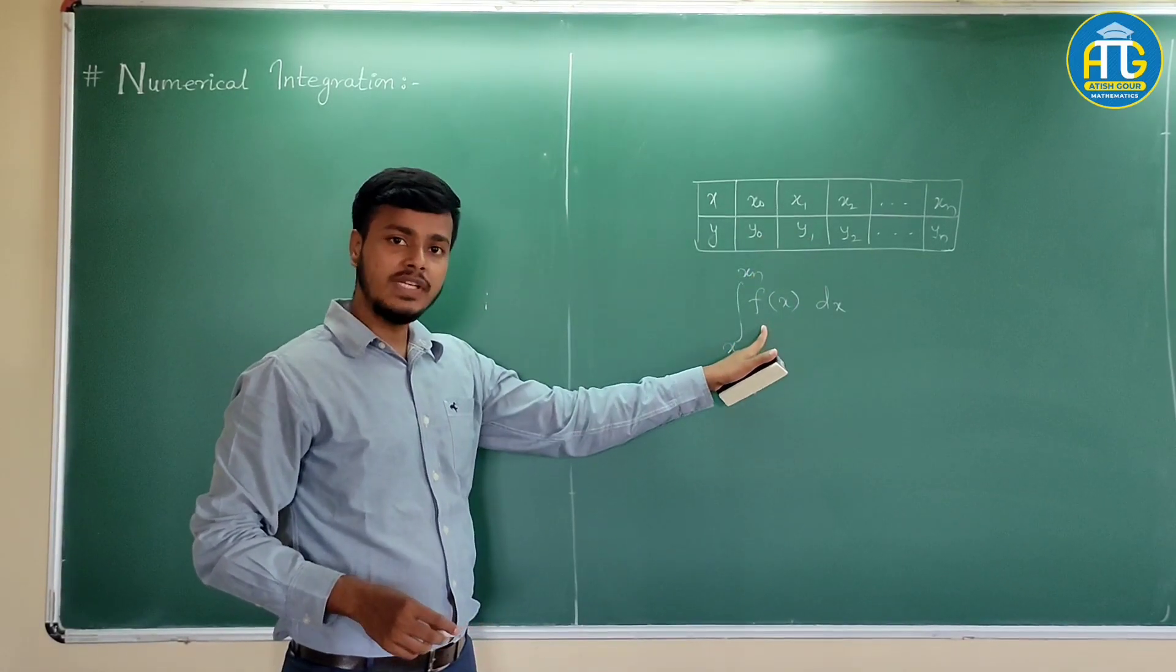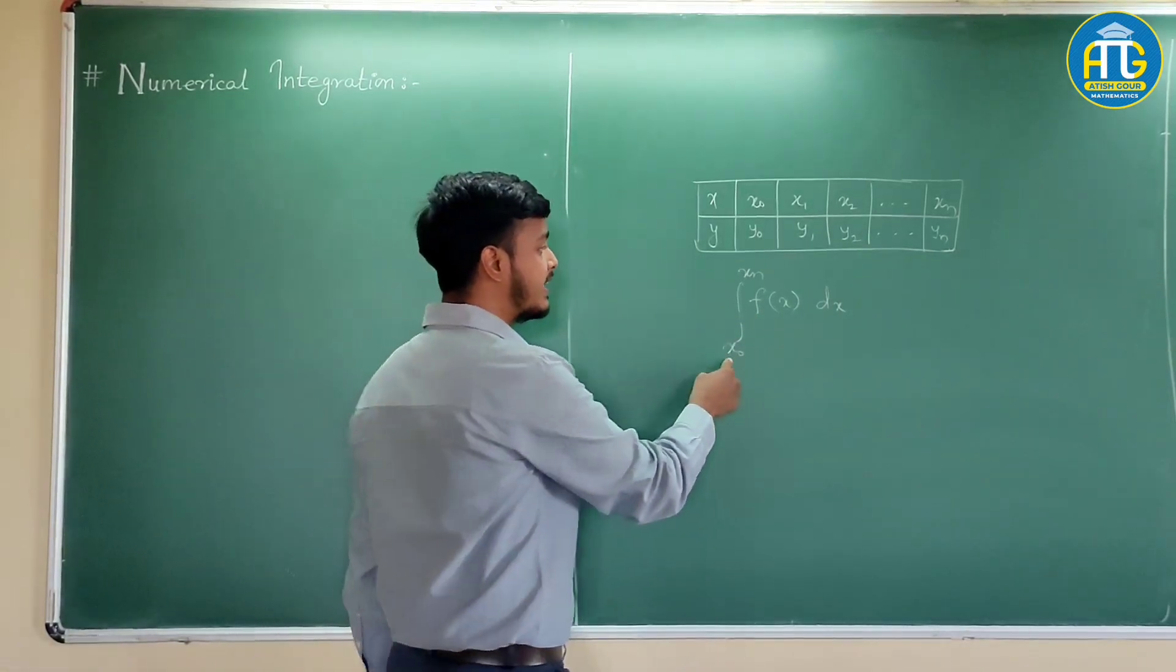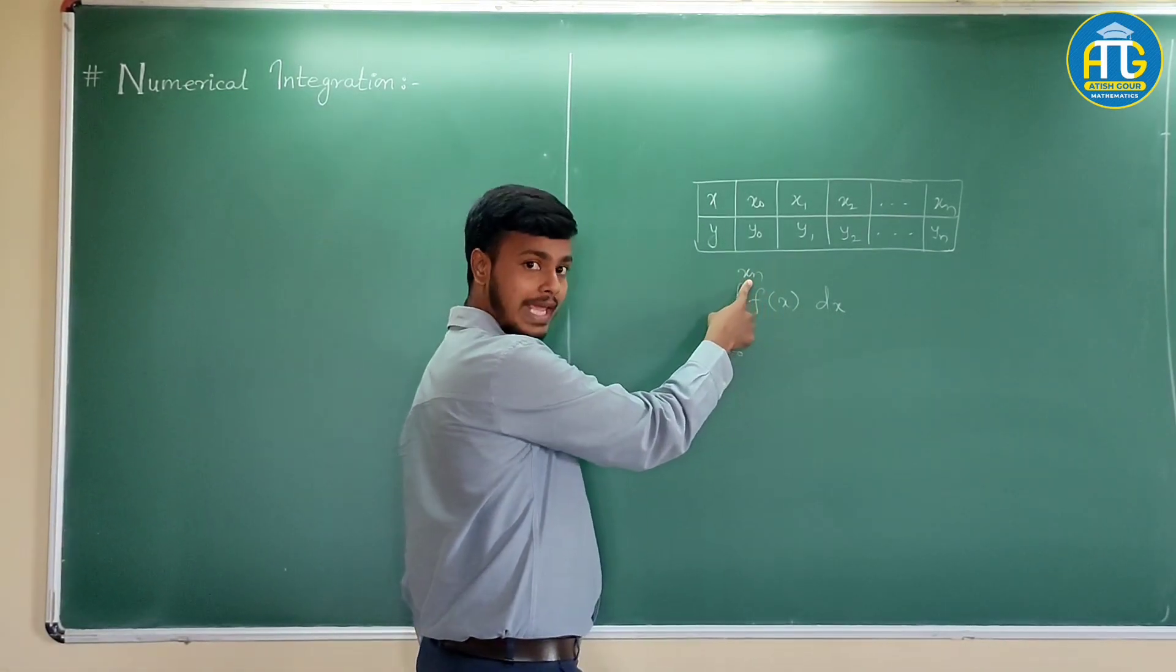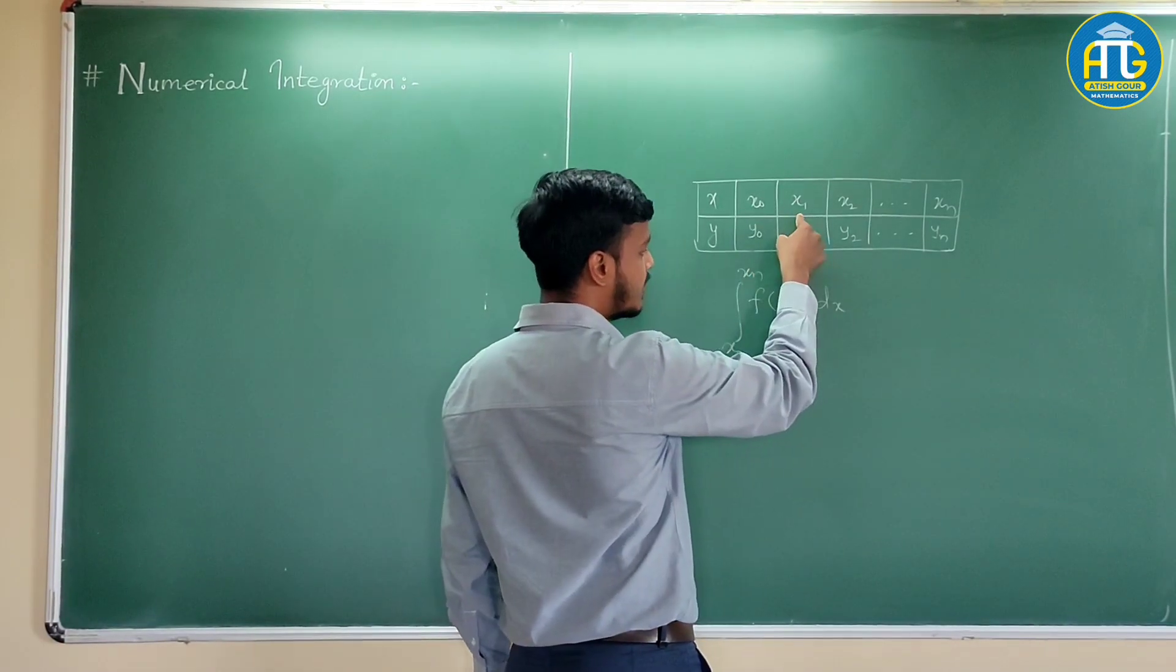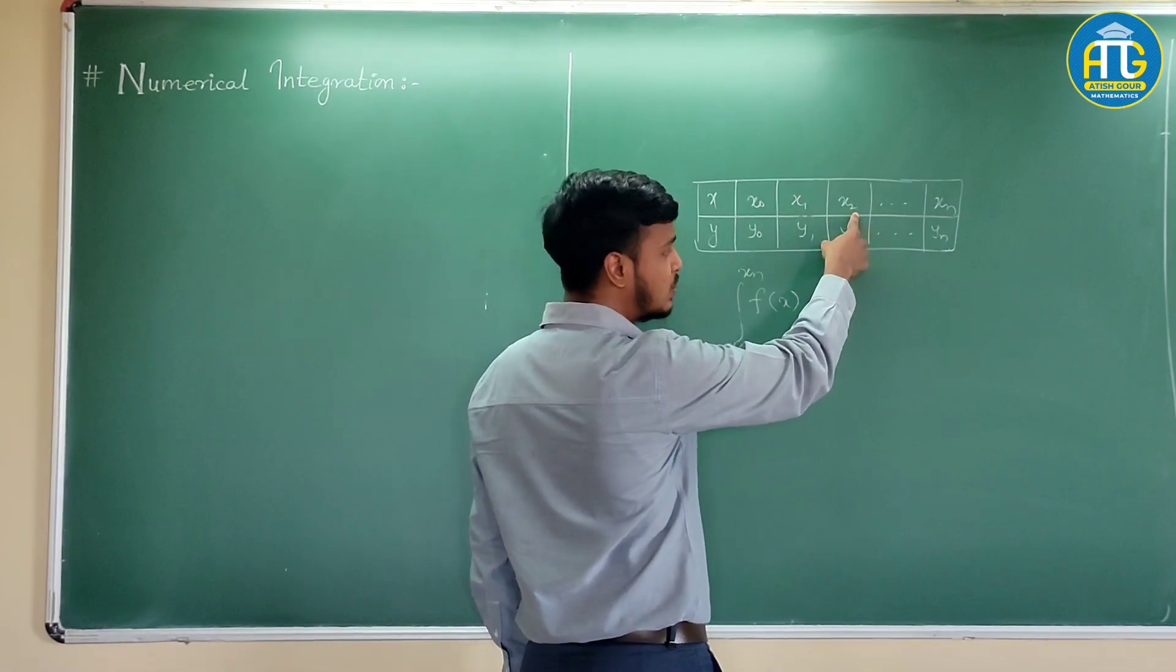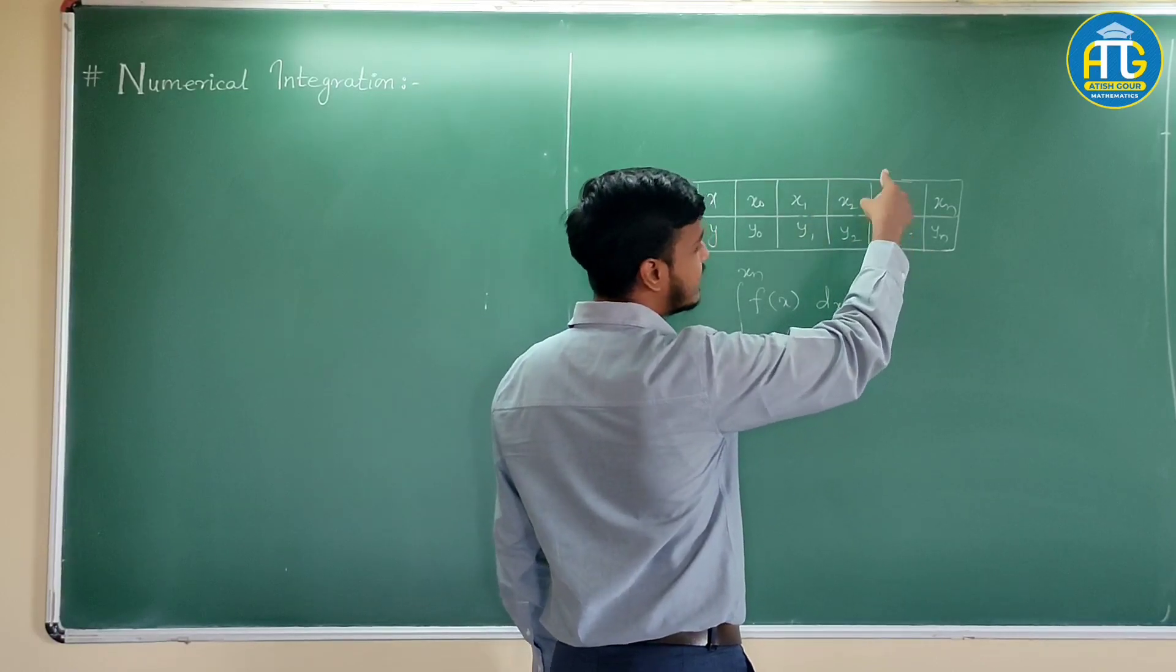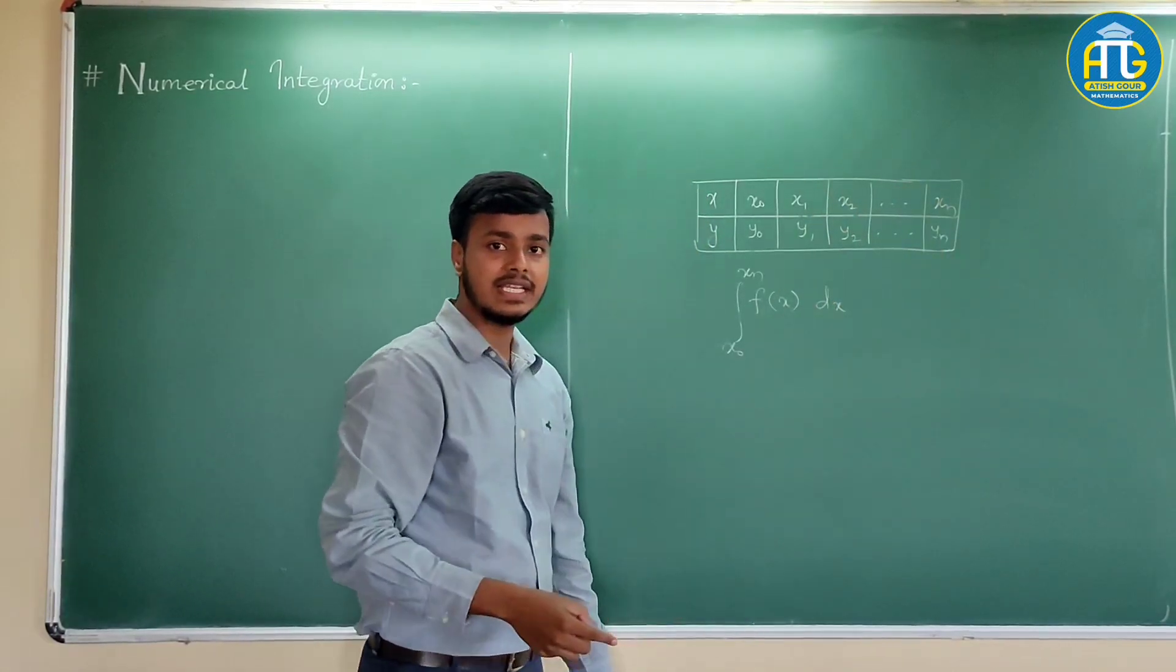To find out this, what we will do? We would divide this interval from x0 to xn into n sub intervals like x0 to x1, then x1 to x2, then x2 to x3, then xn minus 1 to xn.